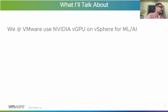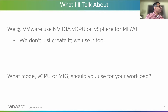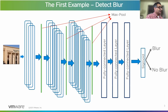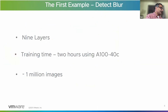I'll begin by showing you, with the aid of a couple of simple examples, how we at VMware use NVIDIA vGPU on vSphere for ML AI that we run in-house. We have a convolutional neural net that we built in-house to detect whether or not an image is blurred. It has three convolutional layers interspersed with max pool layers, which feed into three fully connected layers, and then into a sigmoid activation function. This is a small model with only nine layers. We trained it using NVIDIA vGPU on VMware vSphere — training time roughly two hours using an Ampere GPU configured in an A140c profile, with a training dataset of about a million images.